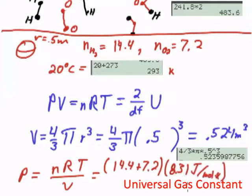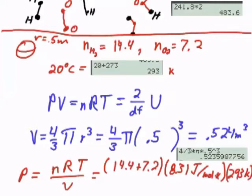which is 8.31 joules per mole Kelvin, times T, which is 293 Kelvin. And we're going to divide by the volume of the gas, which is 0.524 meters cubed.